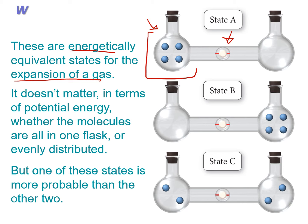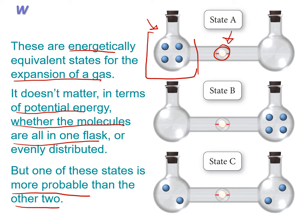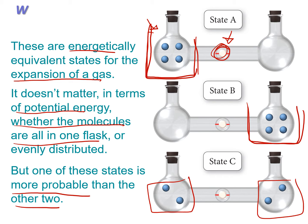It doesn't matter in terms of potential energy whether the molecules are all in one flask or evenly distributed, but because of what the universe prefers, one of these states is more probable than the others. We have three possible states: state A, where all gas particles are on the left; state B, where all particles are on the right; and state C, where we have two particles on each side.